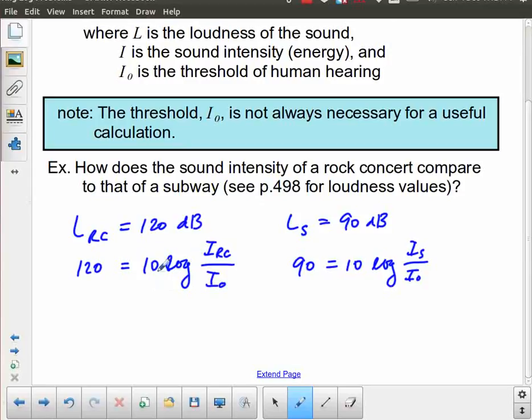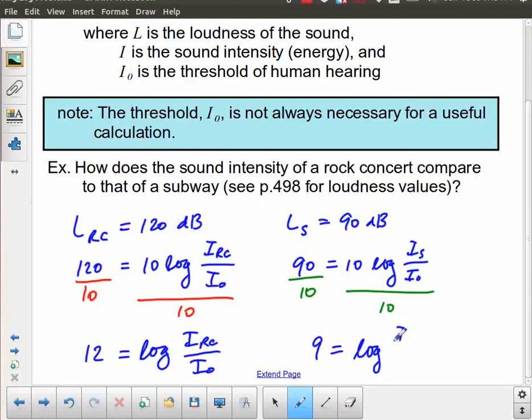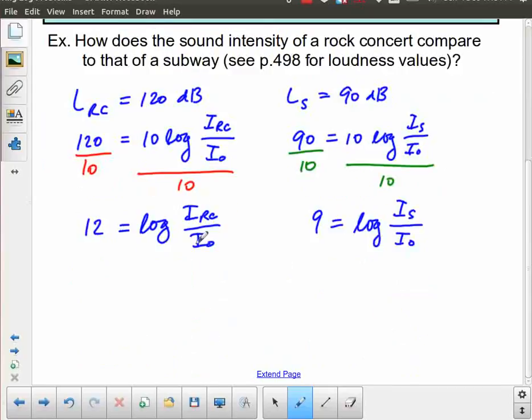Actually, before I do that, I can't do that just yet, because the first thing I need to do is recognize that this is multiplied by 10. So I have to divide both sides by 10 here, divide both sides by 10 here. And that will give me an expression that I can rewrite. So I actually get 12 is equal to the log of i rock concert over i naught. And here I get 9 equals log of i subway over i naught. And now I can use my definition to rewrite this as i rock concert over i naught is equal to 10 to the power 12. And over here, I end up with i subway over i naught is equal to 10 to the power 9.